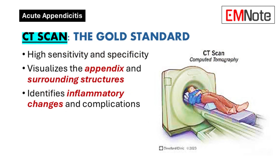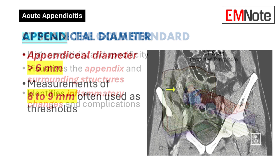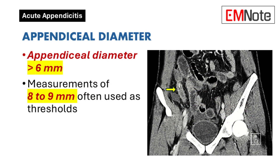CT findings in acute appendicitis: Appendiceal diameter. A key diagnostic criterion is an appendiceal diameter greater than 6 mm. Measurements of 8 to 9 mm are often used as thresholds for diagnosing appendicitis, although this can overlap with normal variants.